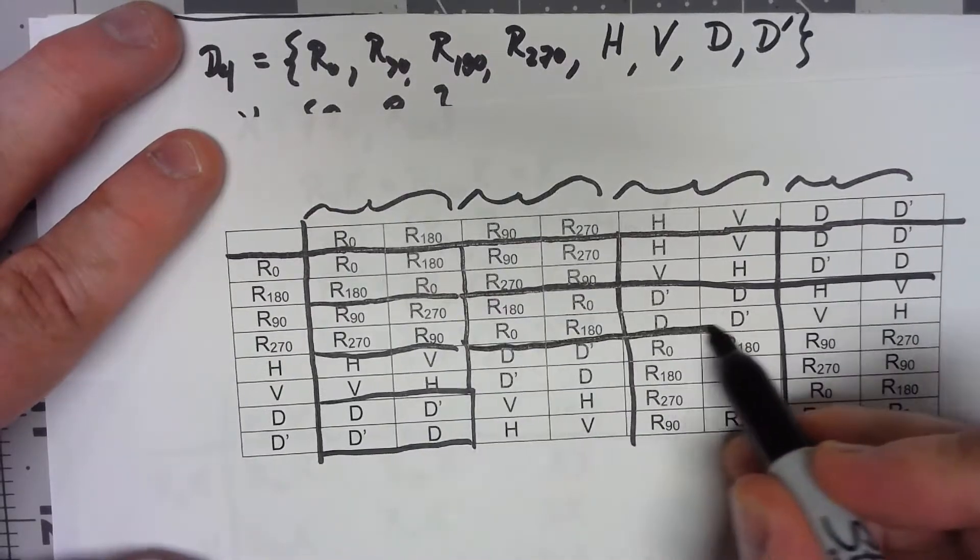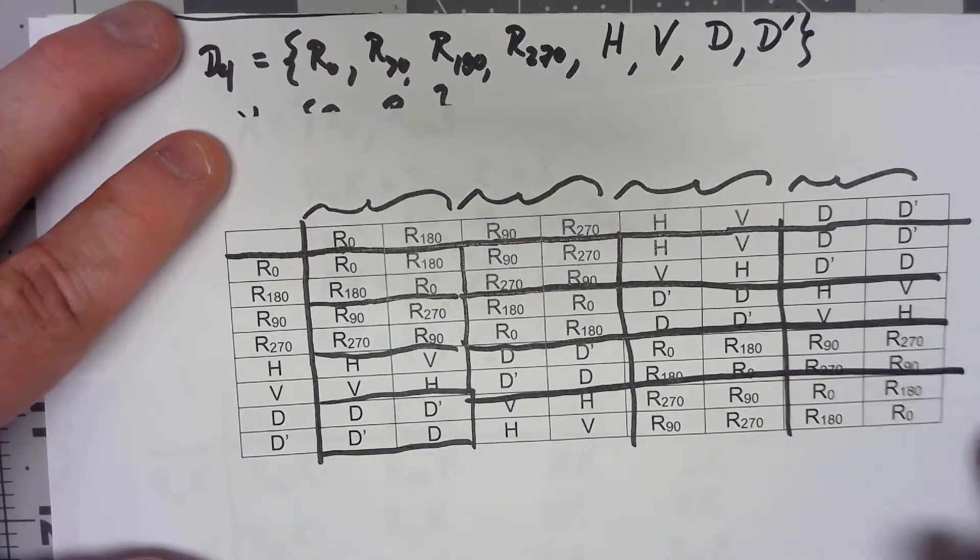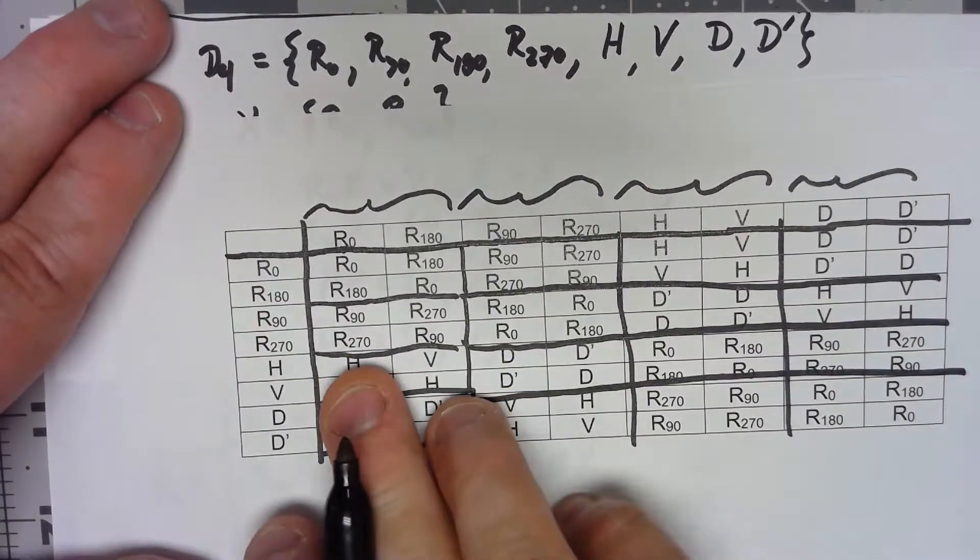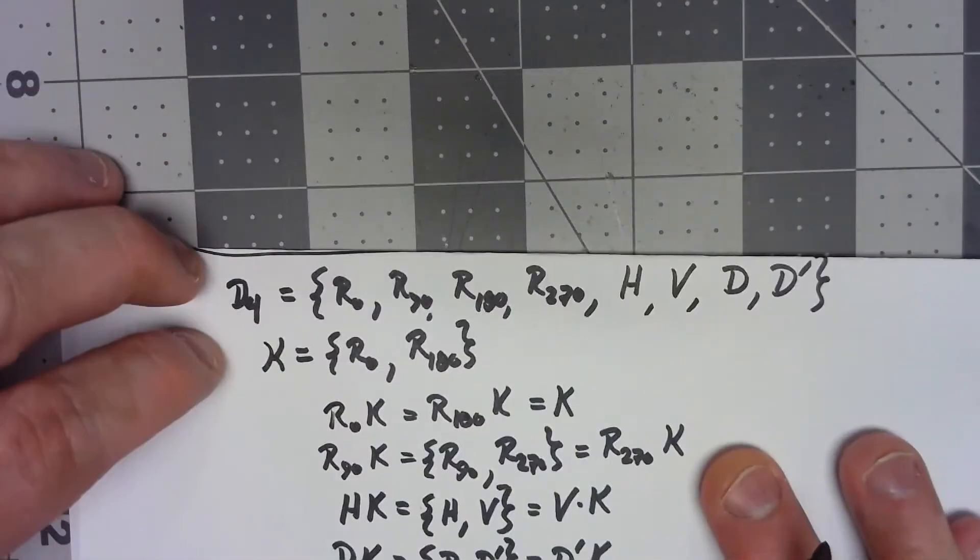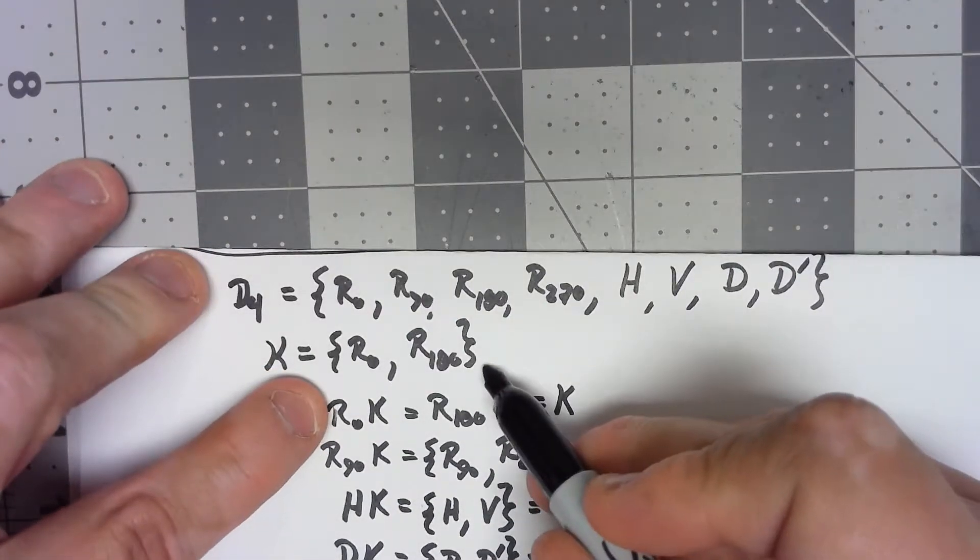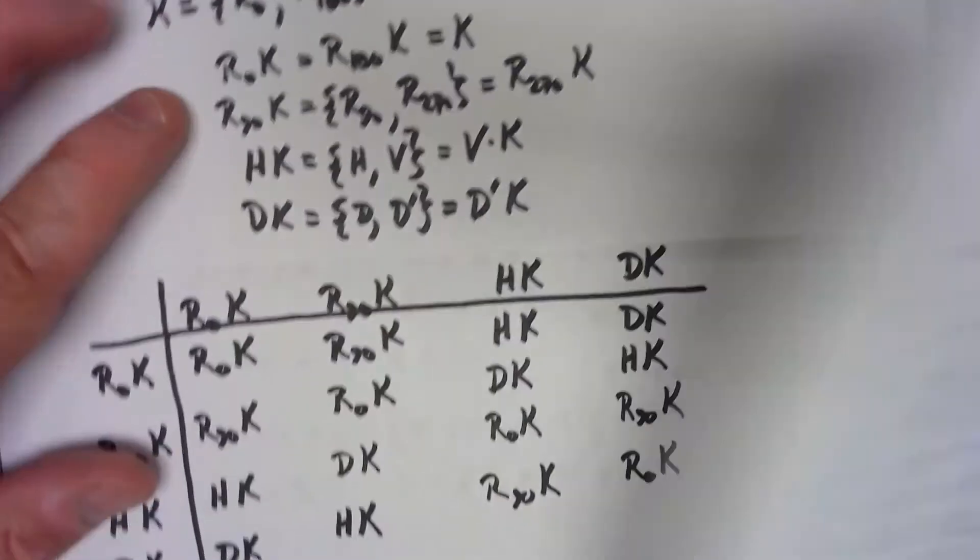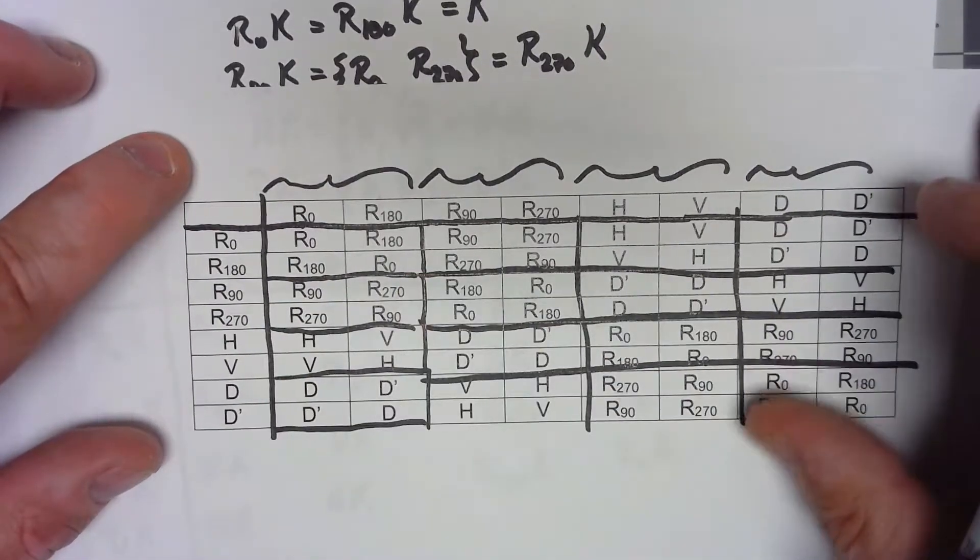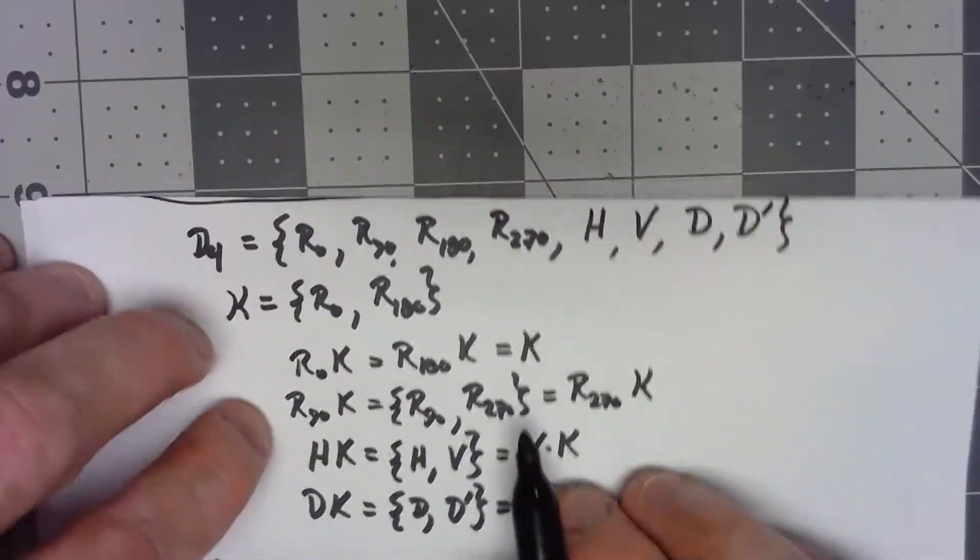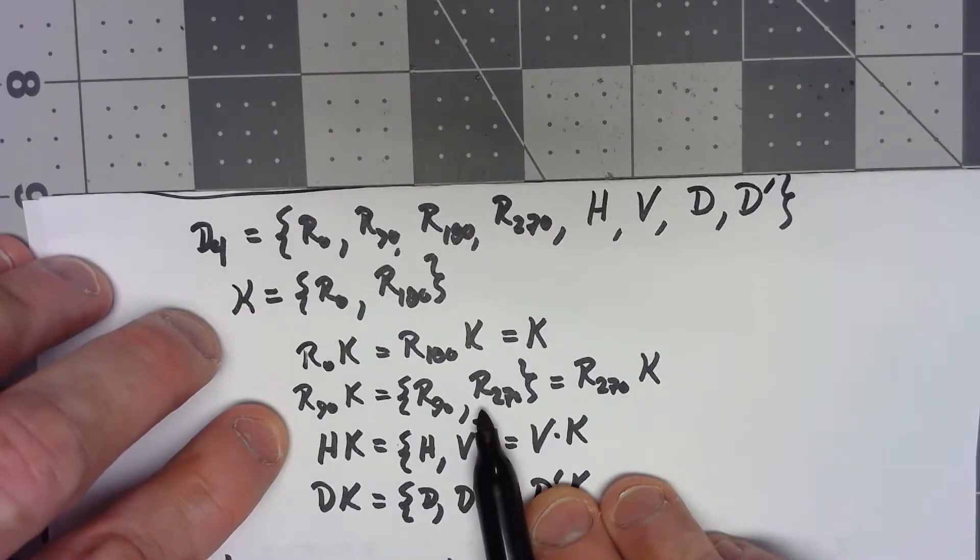Everything we've got here breaks it down into two by two blocks. And if we look at that, R0 and R180, well those were the things that were in K. This two by two block of R90 and R270 are the things that were in the coset R90K.